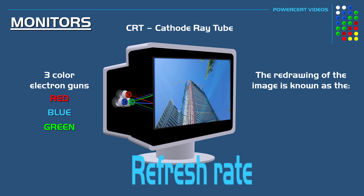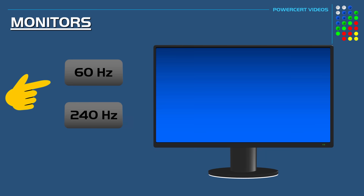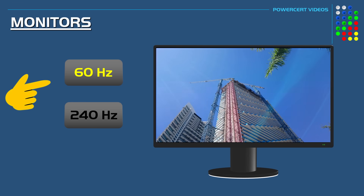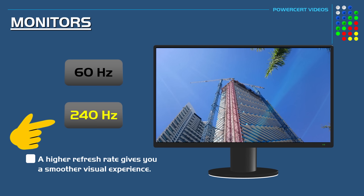This redrawing of the image is known as a refresh rate, which is measured in hertz. So for example, if the refresh rate is 60 hertz, that means the beams sweep across the entire face of the monitor redrawing the image 60 times per second. Today, some higher-end LCD monitors may have refresh rates as high as 240 hertz. Having a higher refresh rate reduces eye discomfort, reduces motion blur, and gives you a smoother visual experience.